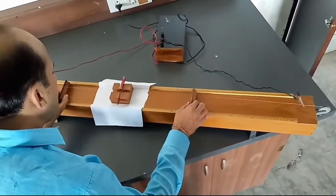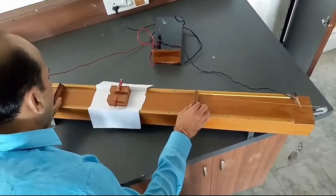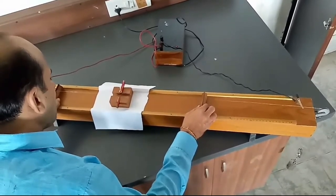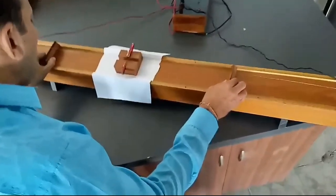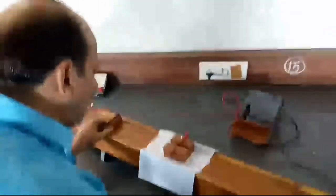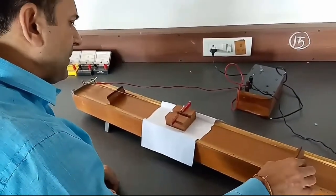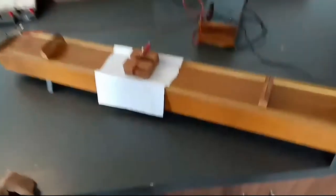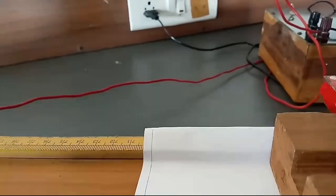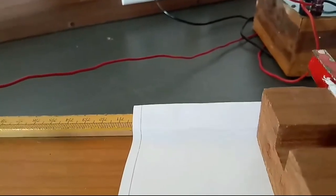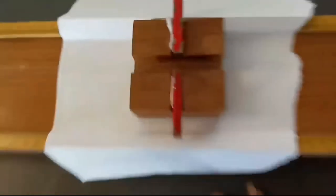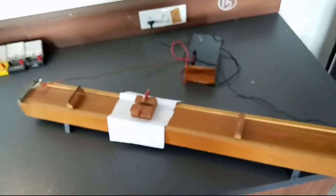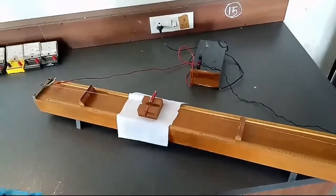Increase the length of the wire by sliding these supports outward, and when you produce the maximum amplitude. Now, the length of the wire between two supports is equal to 54 centimeters. Let me note down this reading and find the frequency of AC.